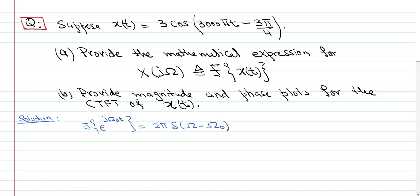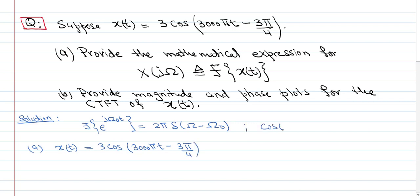If we remember that, then solving is very easy. We first write x(t) using Euler's identity. So we get 3·cos(3000πt − 3π/4), and we'll use Euler's identity: cos(θ) = (e^(jθ) + e^(−jθ)) / 2.